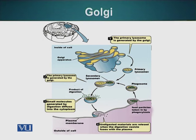Vesicles are actively moved between these three different types of cisternae. These cisternae are functionally distinct — they have different types of enzymes performing different types of reactions on these proteins.